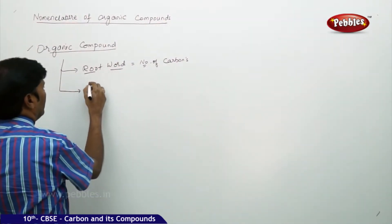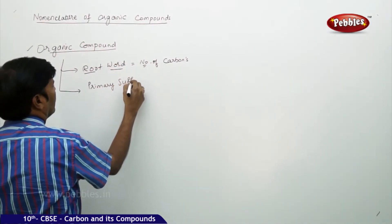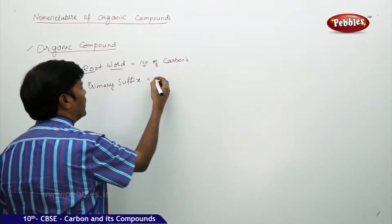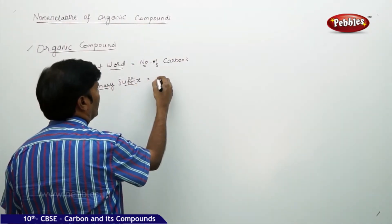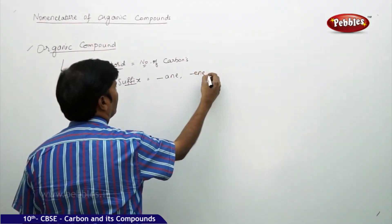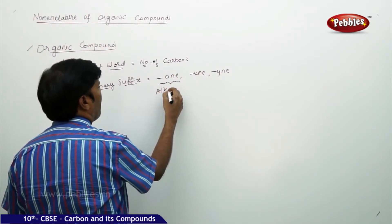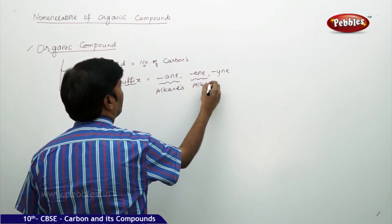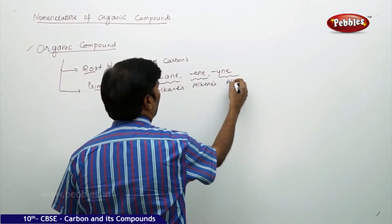An organic compound is also made up of a primary suffix. With respect to primary suffix: 'an' stands for alkanes, 'en' stands for alkenes, and 'yn' stands for alkynes.